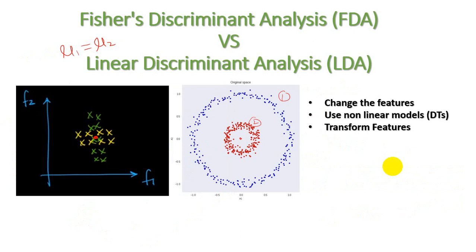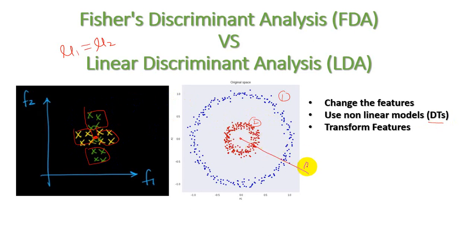To handle these failure conditions, we have some tricks. First, we can change our features — the attributes used for data. If you cannot solve the problem in linear form, you can use a non-linear model like a decision tree to handle the data. You can make each region a separate class. Also, in the second example, if I create a 3rd dimension and name it R, I can relate the values of one class to this new dimension and the other class to it as well, making separation easier.